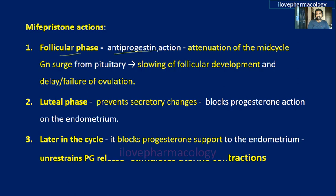In the follicular phase, mifepristone's anti-progestin action attenuates the mid-cycle gonadotropin surge from the pituitary, thereby slowing follicular development, which in turn delays or prevents ovulation.